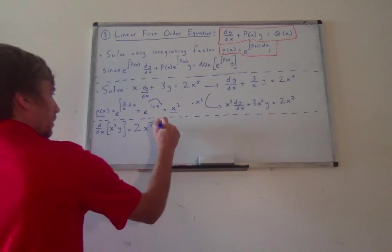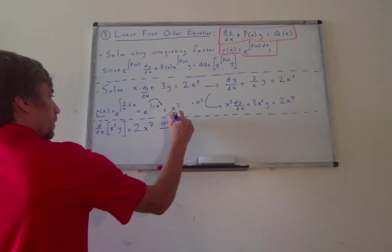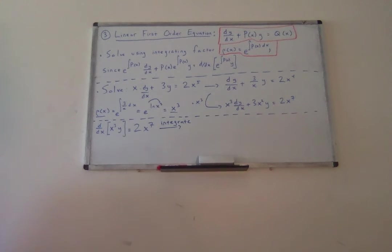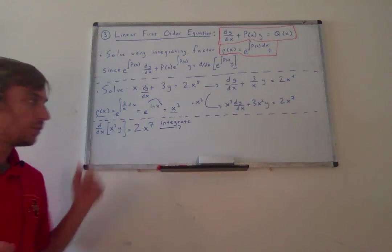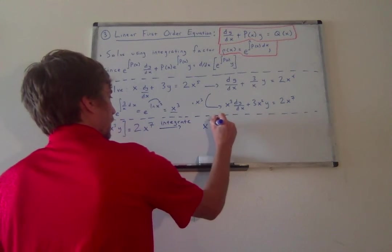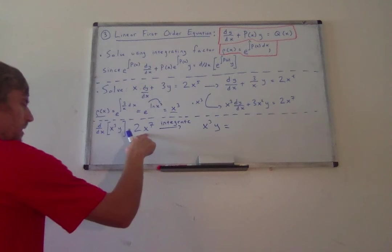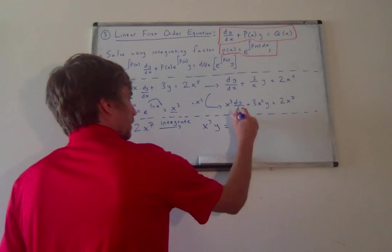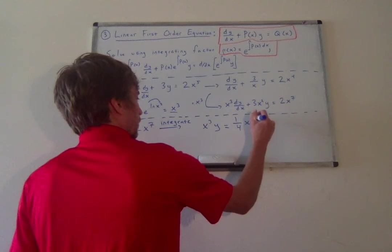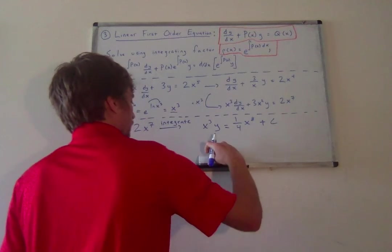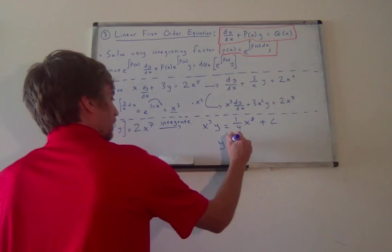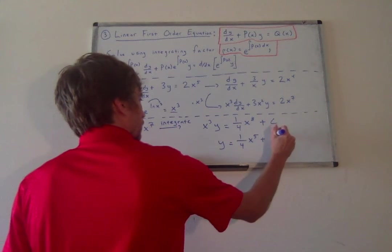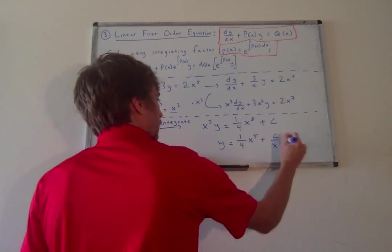And now we just integrate. The integral of this derivative is just x cubed y. For 2x to the seventh, I add 1 to the power to get x to the eighth and divide by it, giving me one-fourth x to the eighth plus C. Then I could solve for y to get an explicit solution of one-fourth x to the fifth plus C over x cubed.